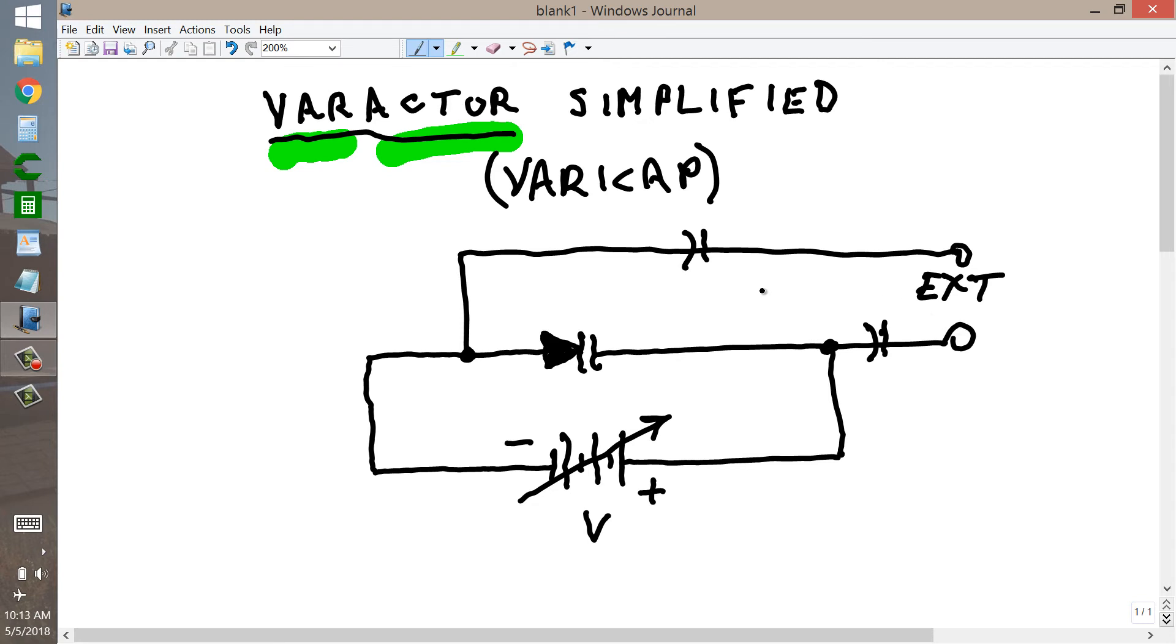I'd recommend putting capacitors on both ends of the output going to the external circuit. Now you have here a variable capacitance, which depends on the series values of the capacitances C1 and C2, plus the varactor capacitance.